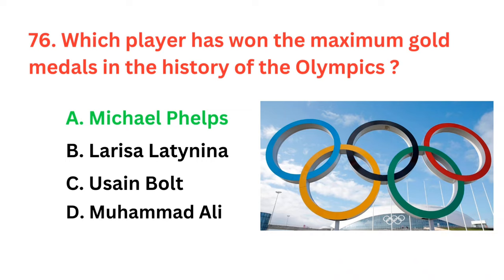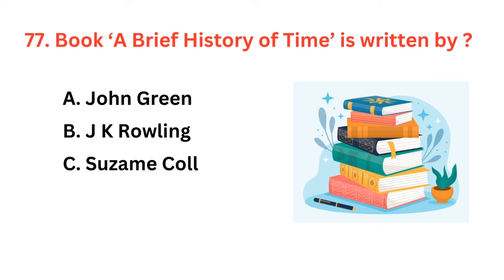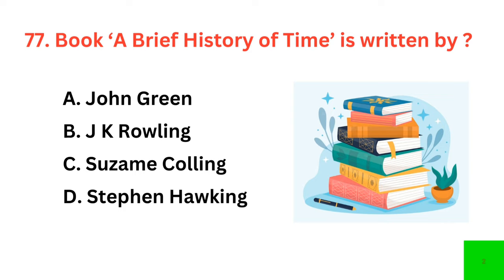The book 'A Brief History of Time' is written by? The correct answer is option D: Stephen Hawking.